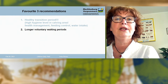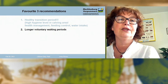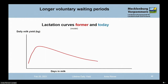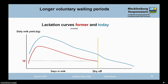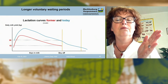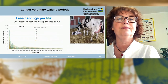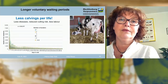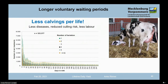My second recommendation: a longer voluntary waiting period. Here you can see two modeled lactation curves. The red one symbolizes former herd levels when a calving interval of 400 days was determined. The blue one should symbolize your cows today. Most of us have never adapted the calving interval to increased milk yield, so we have to dry off cows sometimes with more than 30 kilograms of milk per day. If we extend the lactation period by a longer voluntary waiting period, cows will have less calvings per life, meaning less diseases per postpartum, reduced culling risk, and less labor in the transition period.